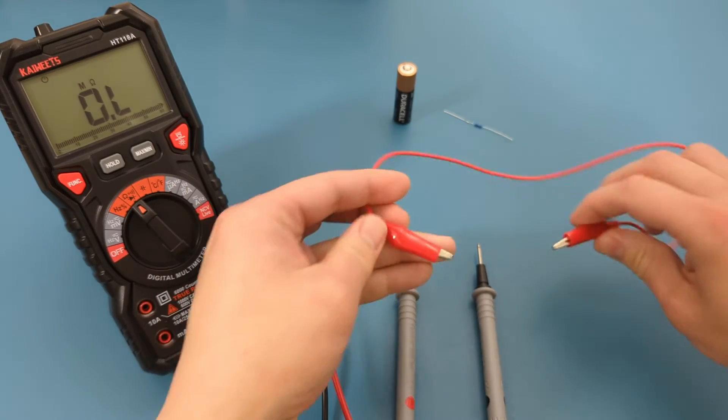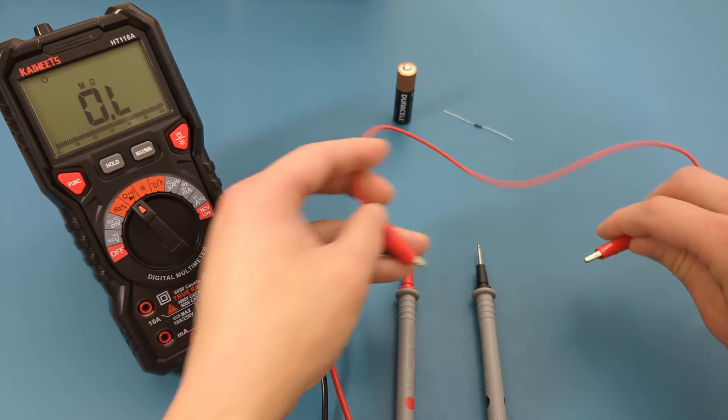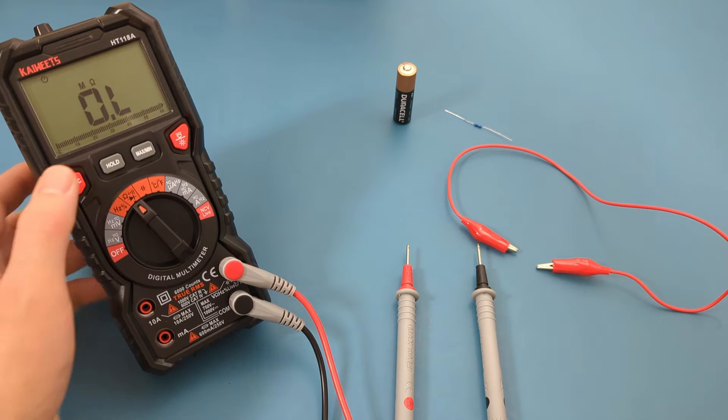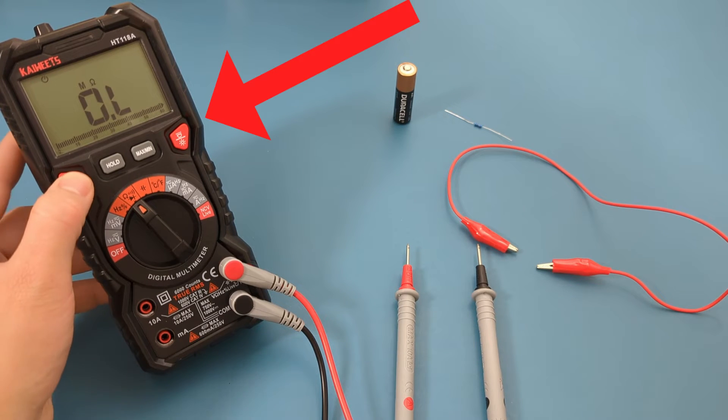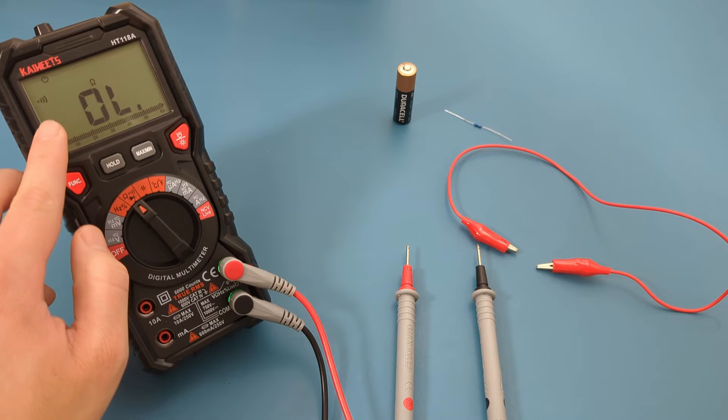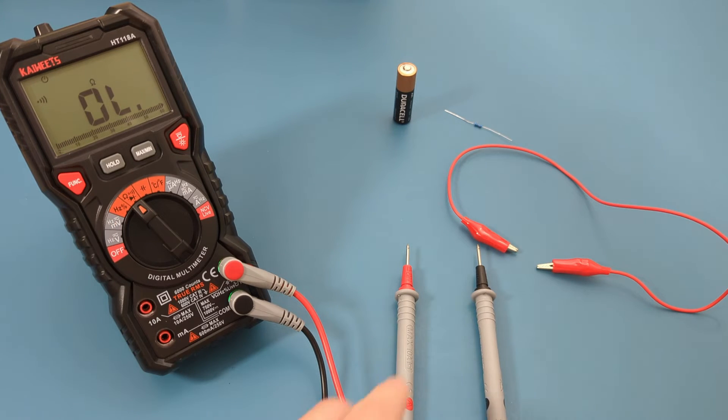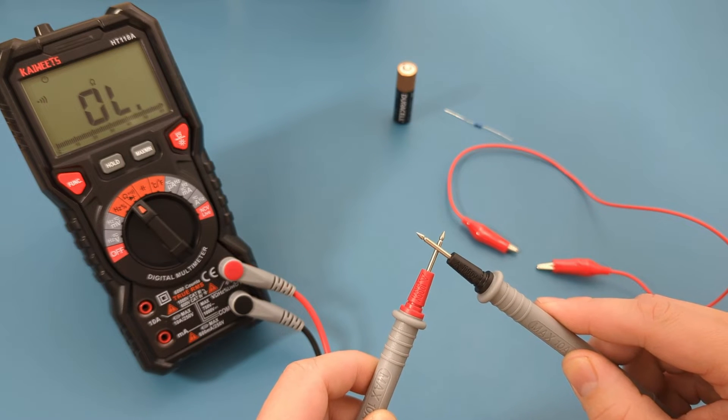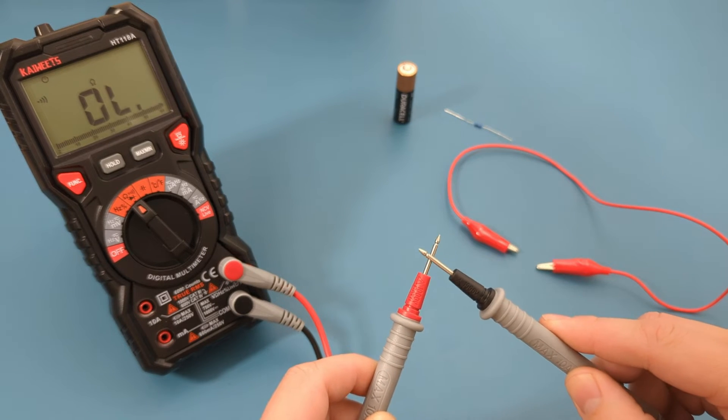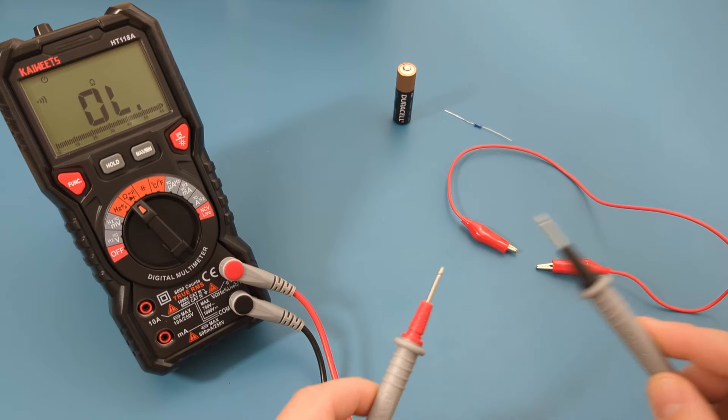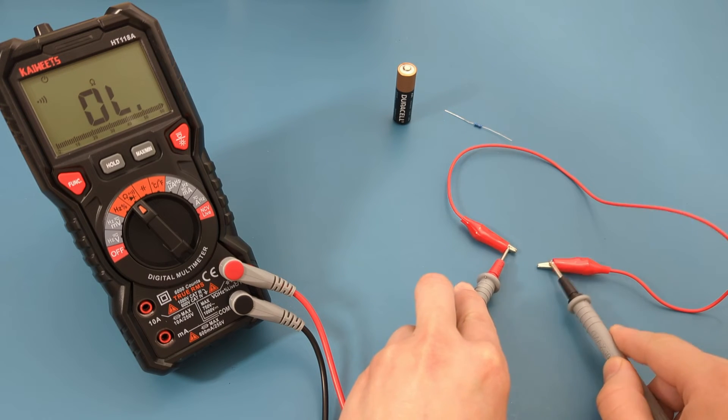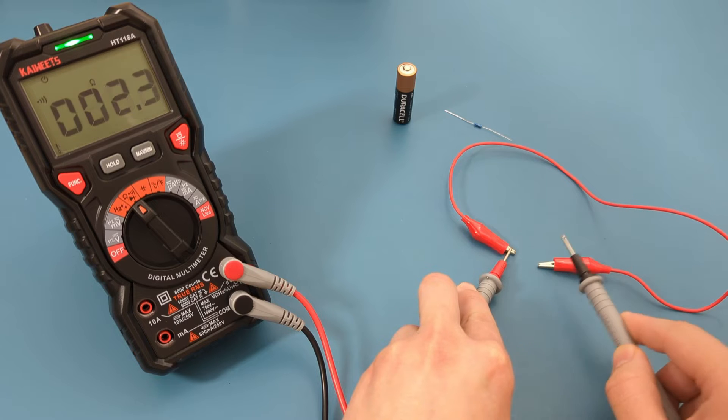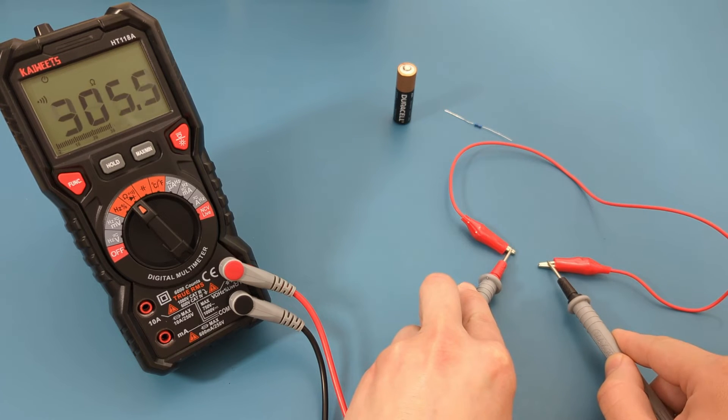The next test is to see if there is continuity with this alligator clip and it's not broken. Press the red function button to toggle to the continuity setting. Touch the probe leads together to confirm a small current can flow between the probes. The multimeter should beep. Place the probe leads against the alligator clips. If there is continuity, the multimeter will beep and display a green light at the top.